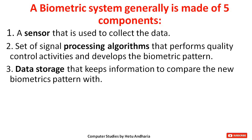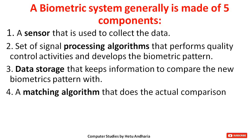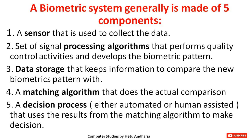The third component is data storage that keeps information to compare new biometric patterns with. Once you set a fingerprint for your smartphone, that fingerprint pattern is stored in your phone. Whenever you put the same or a different fingerprint, it compares with the stored fingerprints. The fourth component is a matching algorithm that does the actual comparison. The fifth component is a decision process, either automated or human-assisted, that uses the results from the matching algorithm to make a decision.